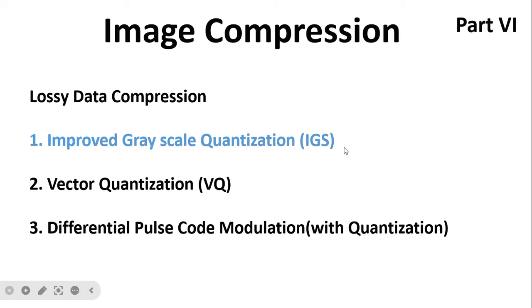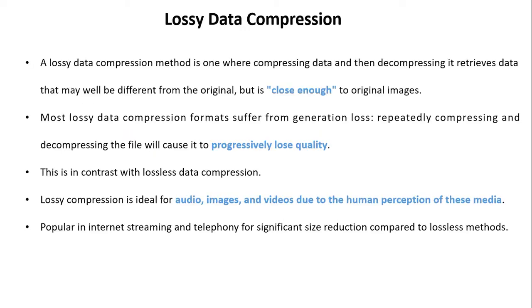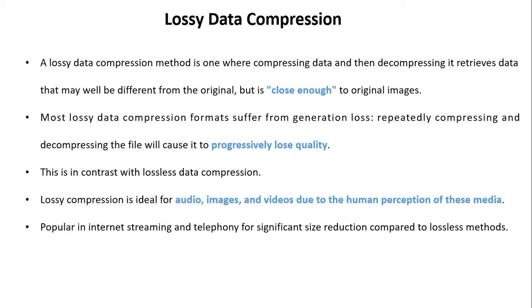First, we will start with what is meant by lossy data compression. A lossy data compression method is one where compressing the data and then decompressing it retrieves data that may be different from the original, but is close enough or approximate to the original image. Most lossy data compression formats suffer from generation loss — that is, repeatedly compressing and decompressing the file will cause progressively lower quality.